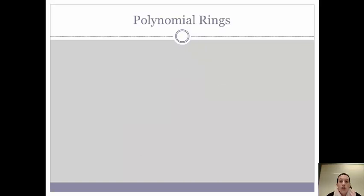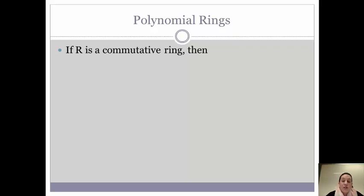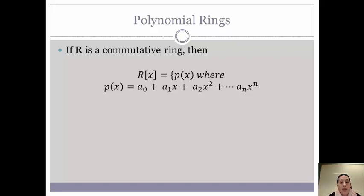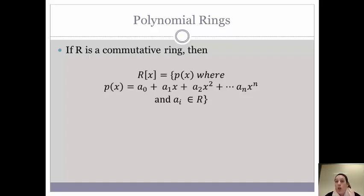So now we are going to transition into polynomial rings. The word ring is still in our title, so what we just talked about is important. We are going to start with R being a commutative ring. If R is a commutative ring, then R joined with X equals P of X, where P of X is just a polynomial: A sub 0 plus A sub 1 X plus A sub 2 X squared, up to A sub N X to the N. And all of our coefficients — A sub 0, A sub 1, all the way up to A sub N — are elements of our ring.